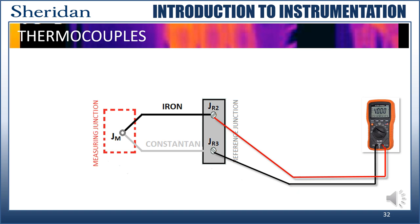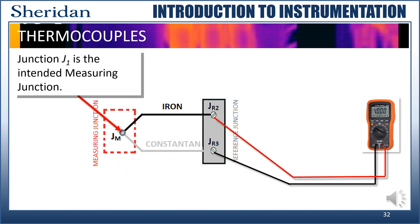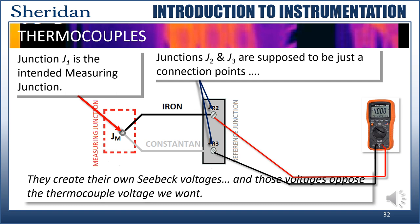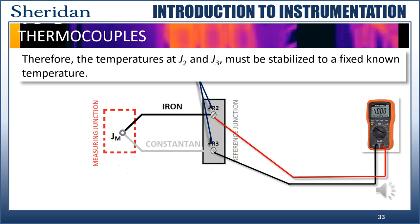Let's take a careful look at this circuit. Junction one is our intended measuring junction. Junctions two and three are supposed to be just connection points. However, they create their own Seebeck voltages, and those voltages oppose the thermocouple voltage. Remember that two factors make thermocouples work: dissimilar metals and a difference in temperature. Your multimeter introduces a dissimilar metal. So J2 is a thermocouple junction of iron and the copper from the multimeter lead, and J3 is a thermocouple of copper and constantan. If there's any difference in the temperature between these two points, we will end up with another thermocouple circuit, which opposes the original measuring junction voltage.